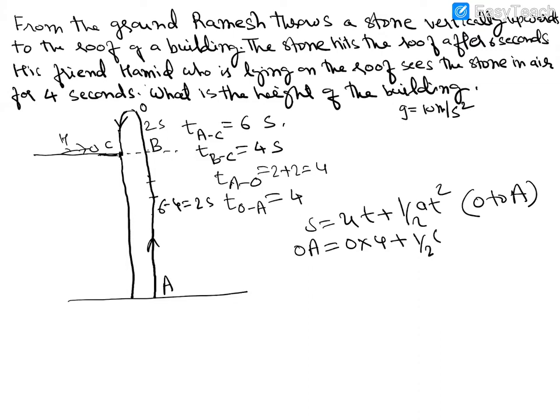Now, what is the acceleration? If you said 10, it is wrong — it is minus 10, because acceleration is downward. So OA equals half times minus 10 times 16, which gives us minus 80. OA is minus 80 because we are considering displacement. But if we want the distance, OA is 80 meters.